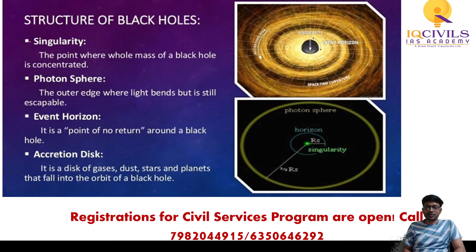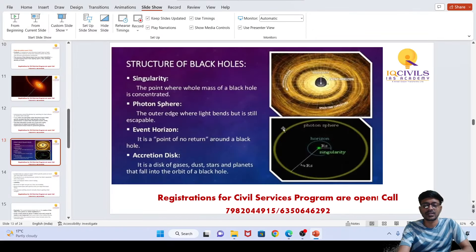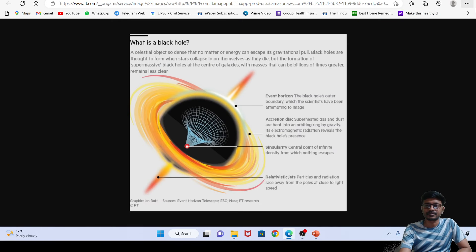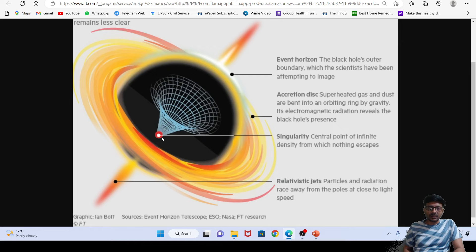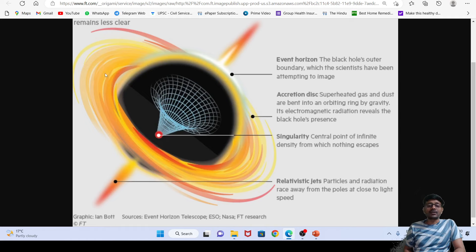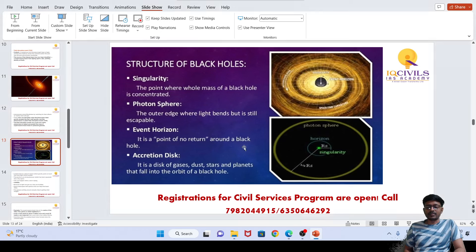The structure of a black hole: at the very center is the singularity — the point where the whole mass of a black hole is concentrated. The boundary of a black hole beyond which nothing, not even light, can escape is called the event horizon. Beyond the event horizon lies the accretion disk — a disk of gases, dust, stars, and planets that orbit the black hole. The relativistic jet emitted is a type of tidal disruption event (TDE).